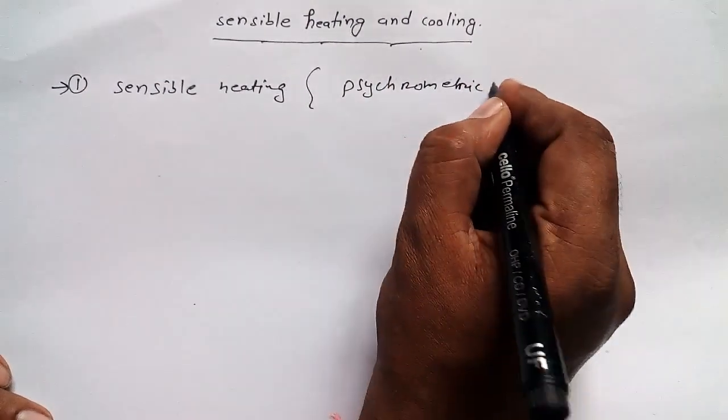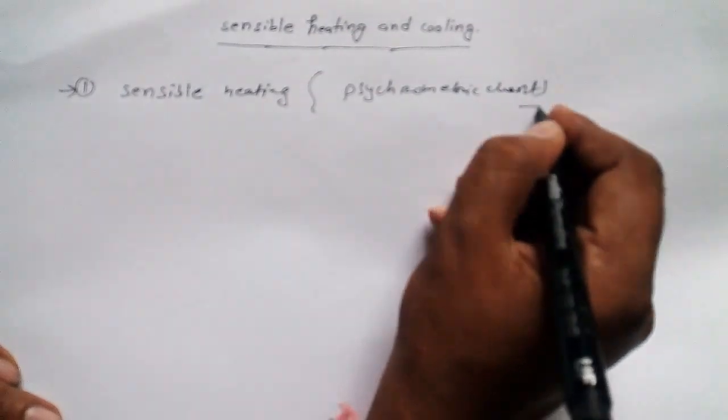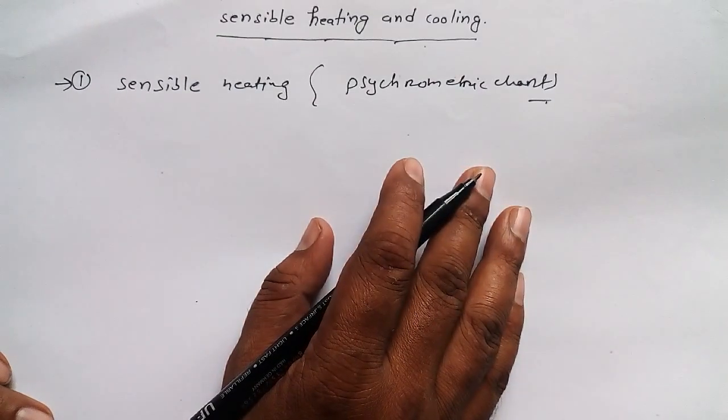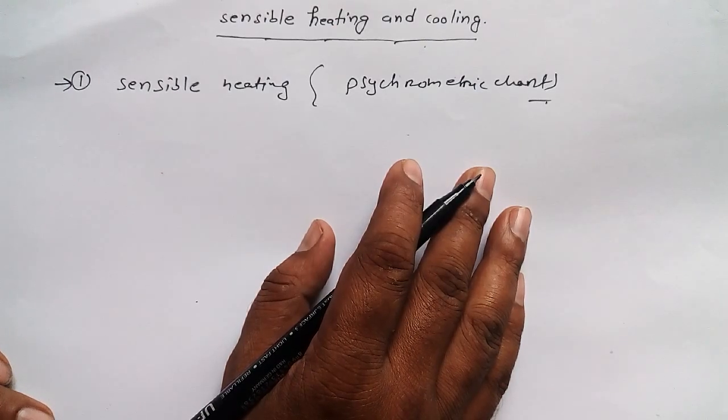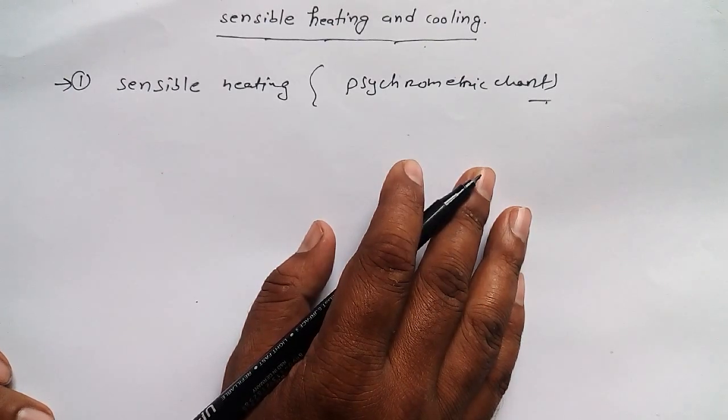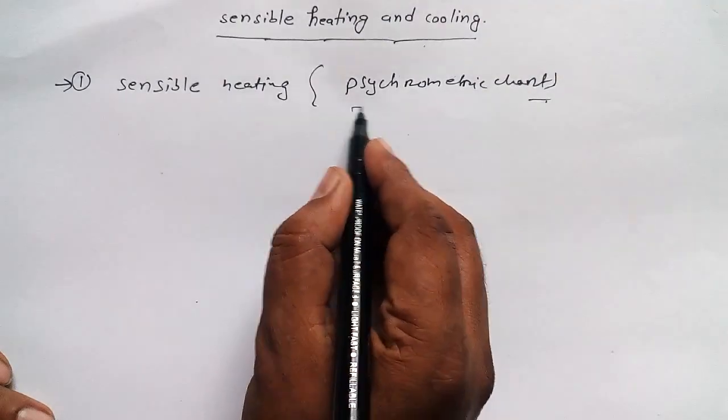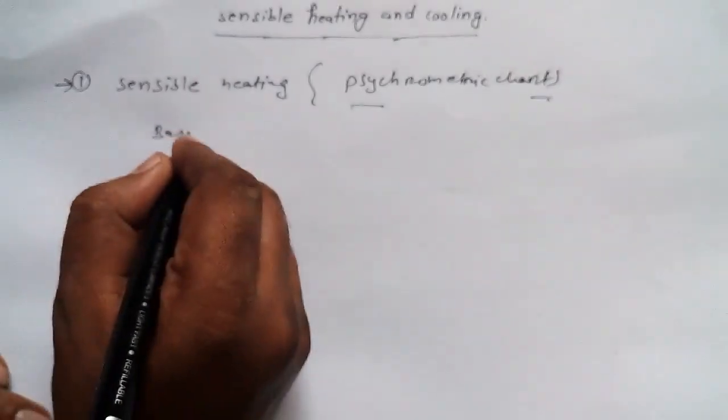As per my knowledge, having studied a lot about thermodynamics, RAC, as well as HMT heat and mass transfer, to understand sensible heating properly you need to know two things: one is psychometric chart and one is basic definition.